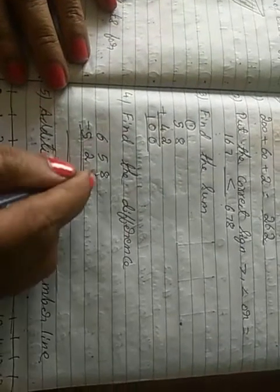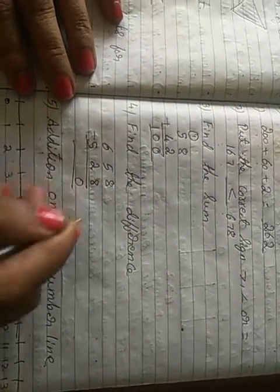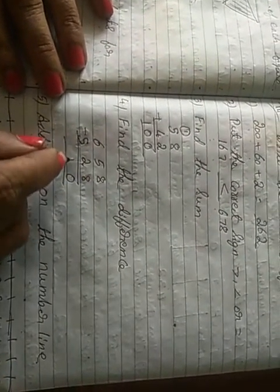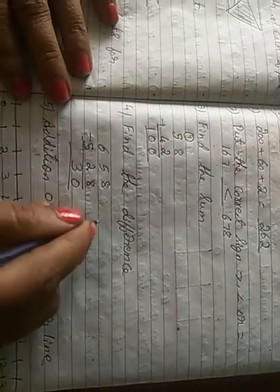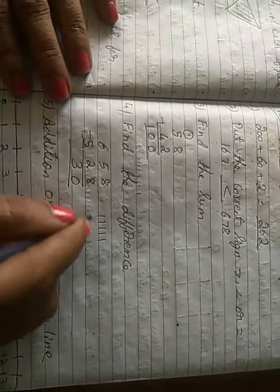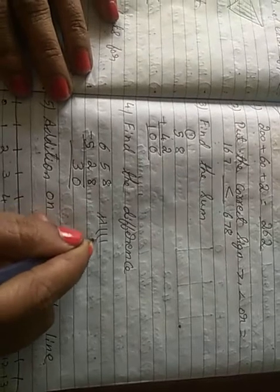Find the difference. Must do the subtraction. 8 minus 8 is 0, 5 minus 2 is 3. Here see, you can put like this. One, two, three, four, five. Take away 2. One, two. Remaining one, two, three.